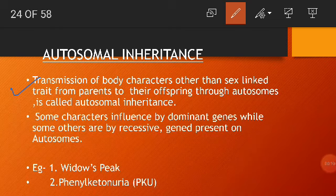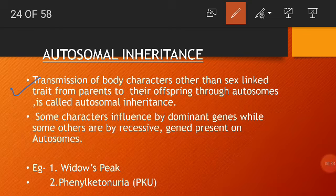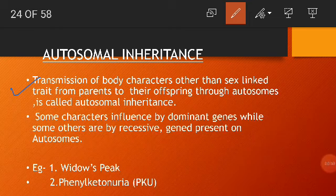As we know, somatic cells in humans contain 23 pairs of chromosomes. Out of 23 pairs, 22 pairs are autosomes and one pair are sex chromosomes. A single pair of chromosomes is involved in sex determination — that is X and Y, or XX — and the remaining 22 pairs are called autosomes. They control all variety of traits other than sex.